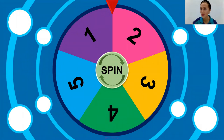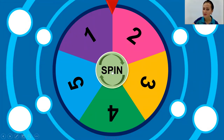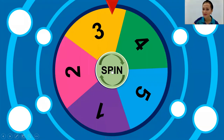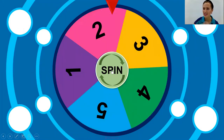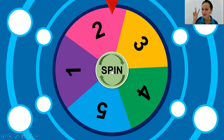Now we have this spinner. If you were correct and answered B, I will spin and see how many points you will get. Let's spin — two points! If you answered question one correctly, you will get two points. Write down how many points you've got.